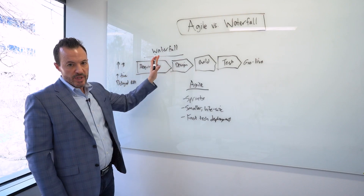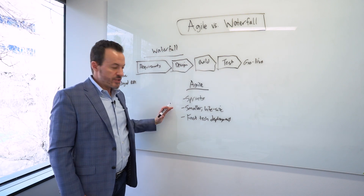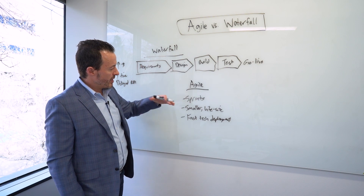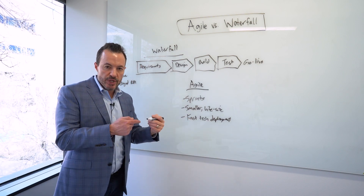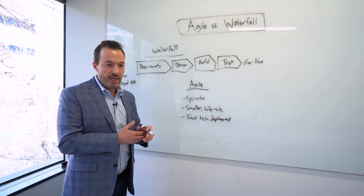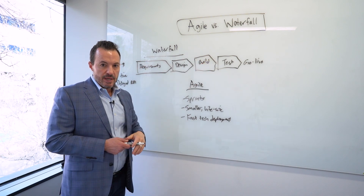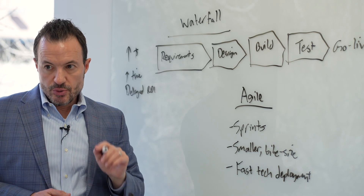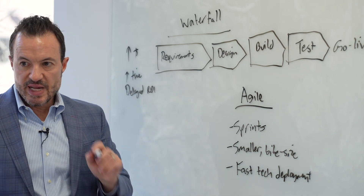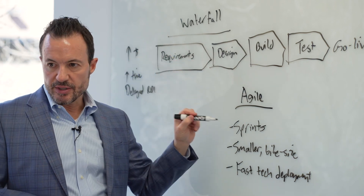Waterfall takes a lot of time and money before you ever get business value. So agile comes along and says you don't need to do this — we'll provide a methodology with sprints so you can have business value right away, much faster than going through an entire sequential process. That is true to some degree, but what we've found is that a lot of organizations miss out on the value of waterfall by going too far down the path of agile.